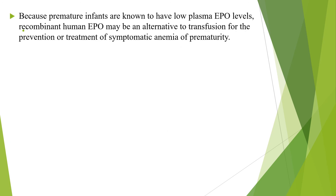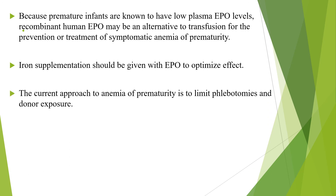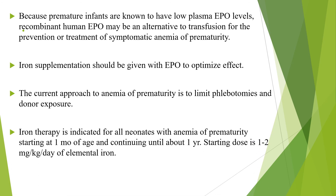Because premature infants are known to have low plasma erythropoietin levels, recombinant human erythropoietin might be an alternative to transfusion for the prevention or treatment of symptomatic anemia of prematurity. Iron supplementation should be given when administering recombinant human erythropoietin to premature babies to optimize its effect. Iron therapy is indicated for all neonates with anemia of prematurity starting at one month of age and continuing until about one year, with a starting dose of 1 to 2 mg per kg per day of elemental iron.